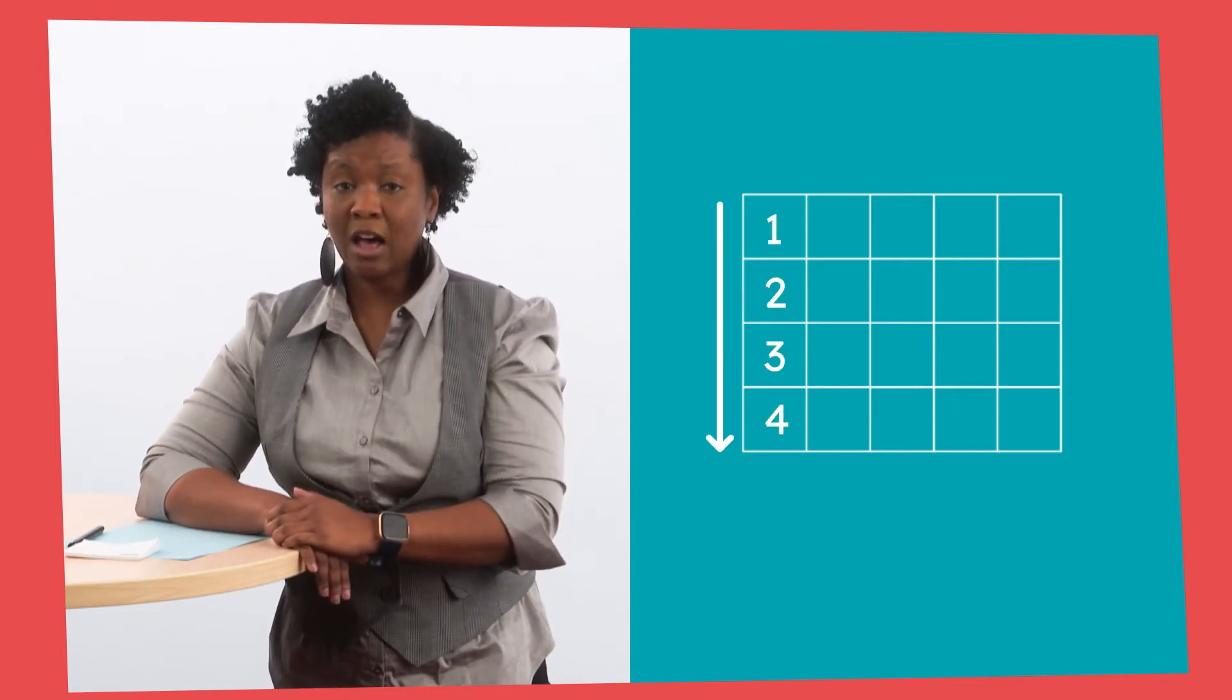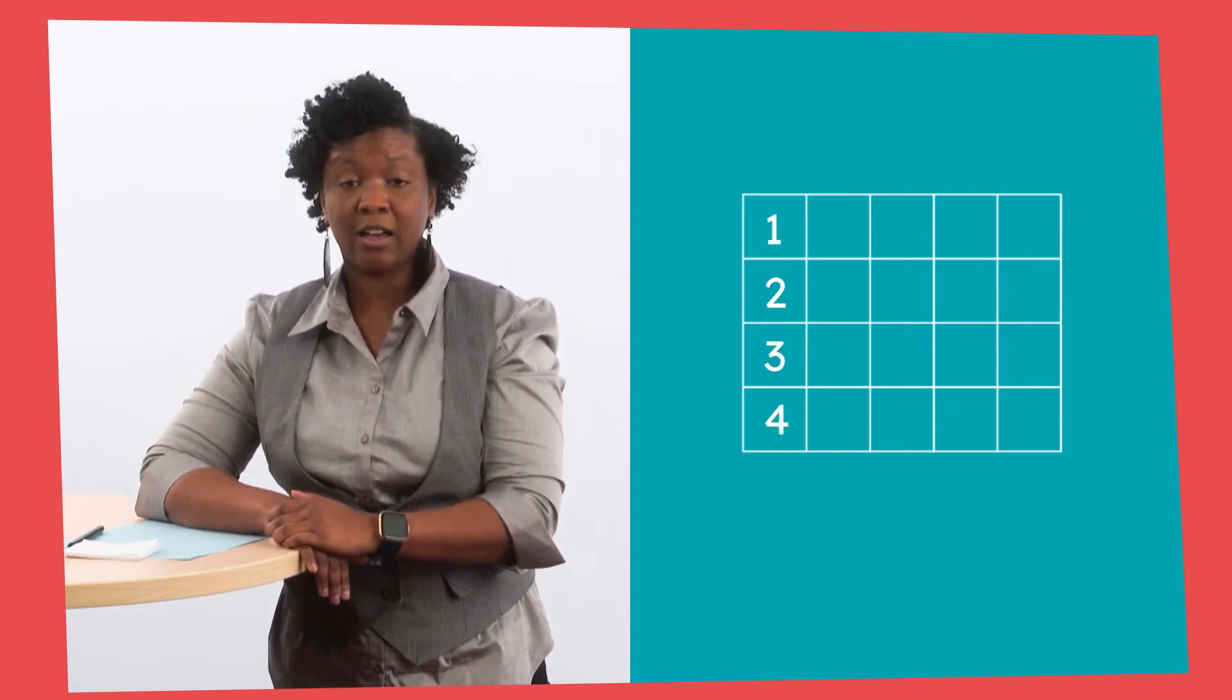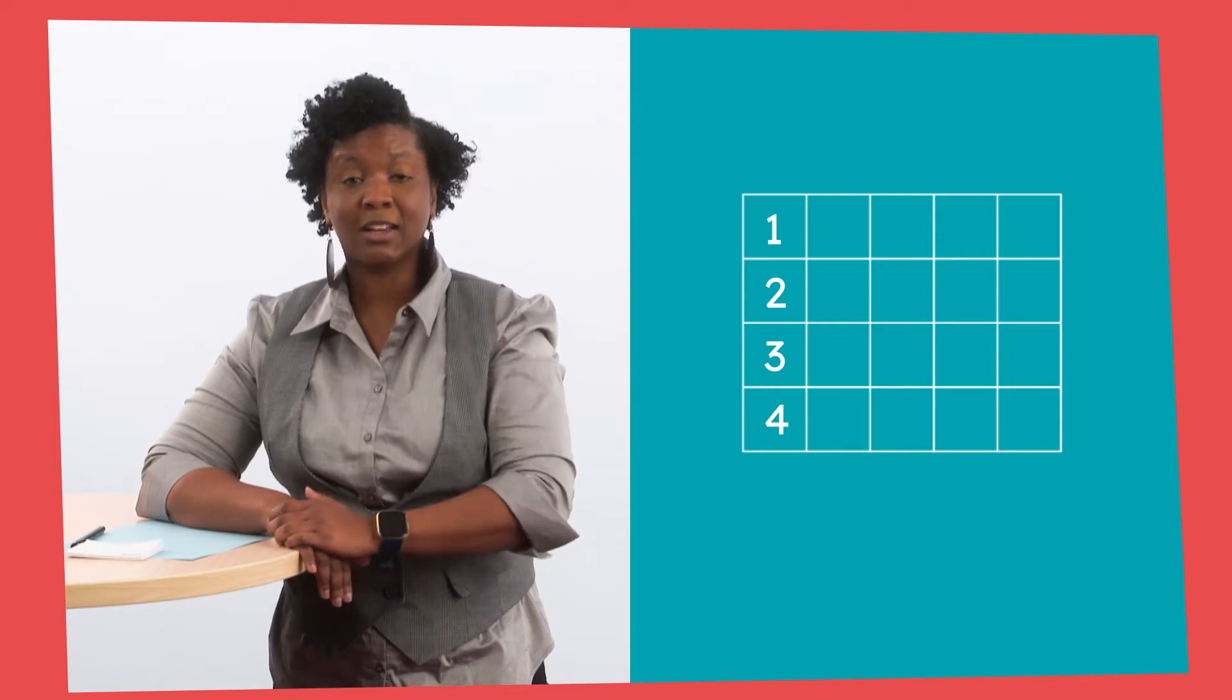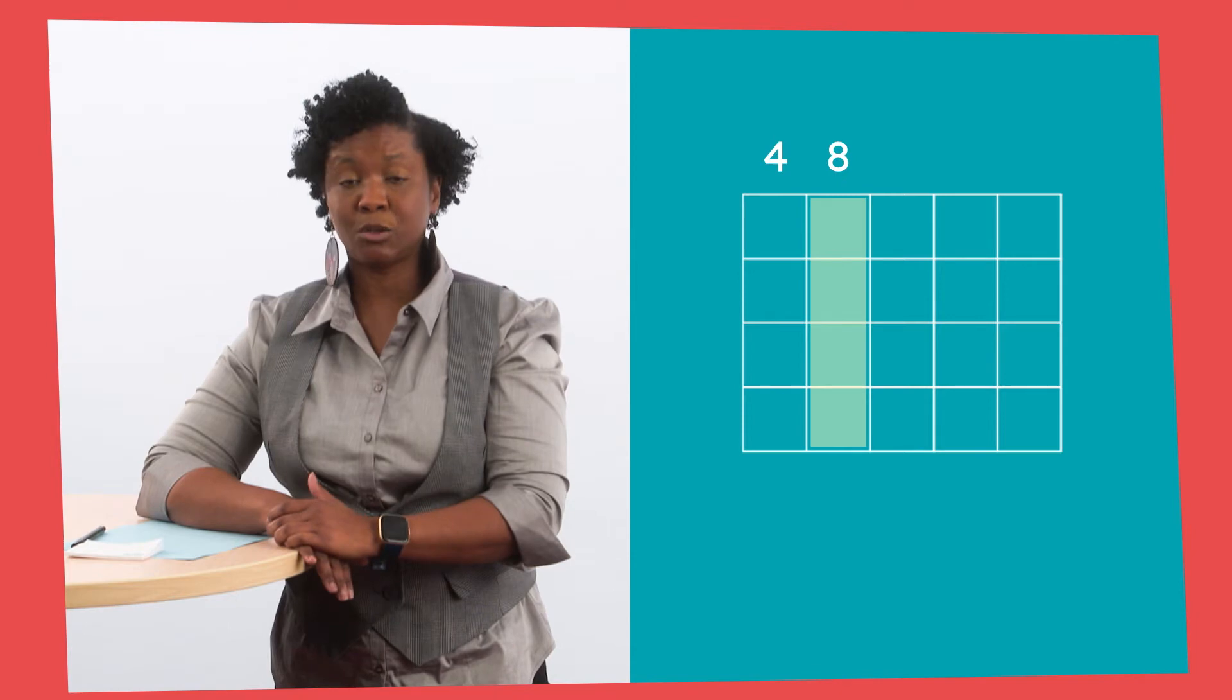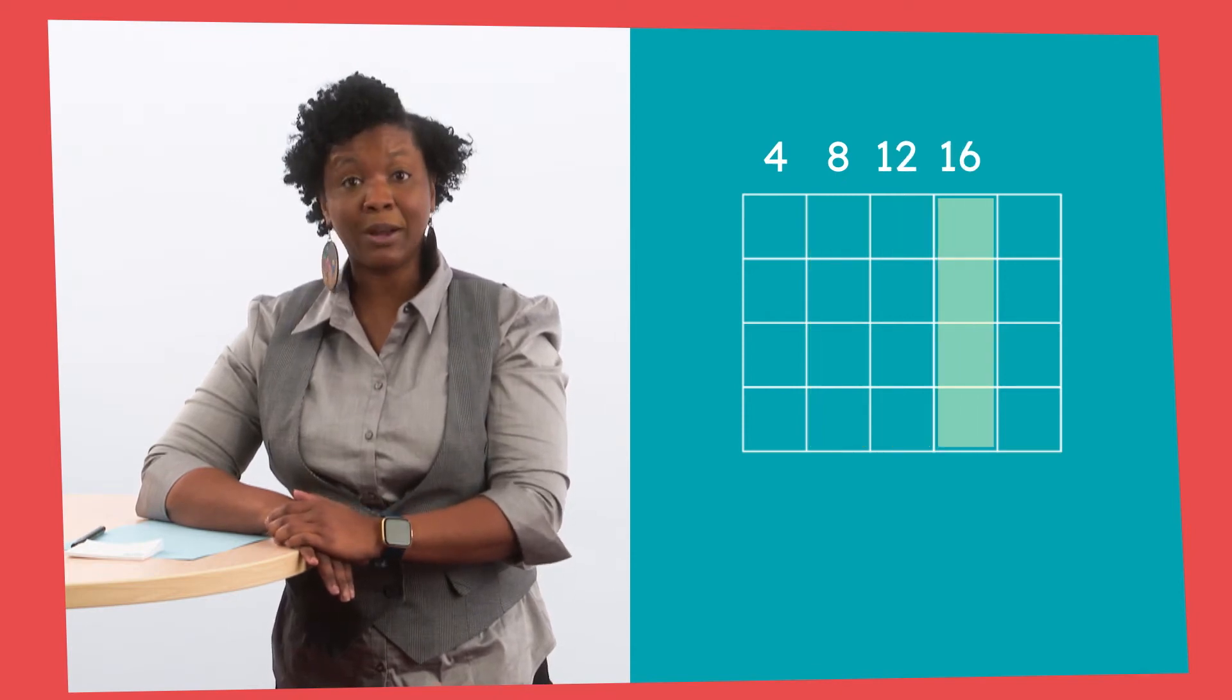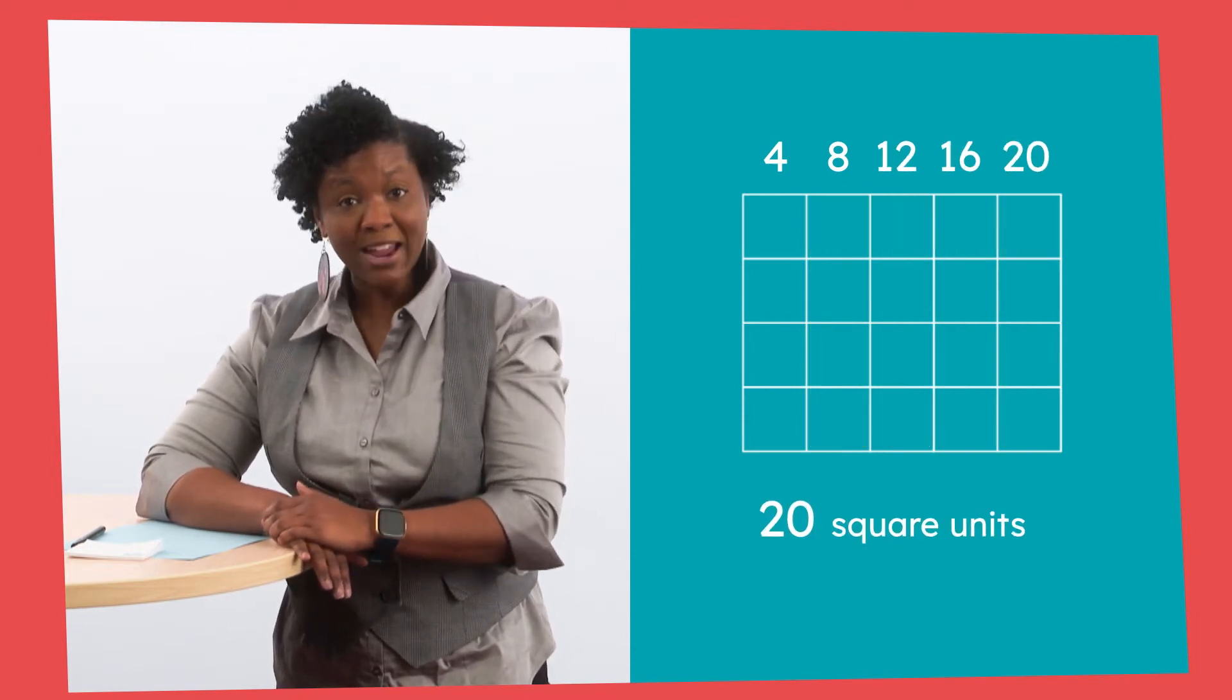What's that? You counted a similar way, but you counted groups of 4 instead? Oh, I see. The first column of our rectangular area measures 4 square units. Let's count the columns. 4, 8, 12, 16, 20. 20 square units. Great!